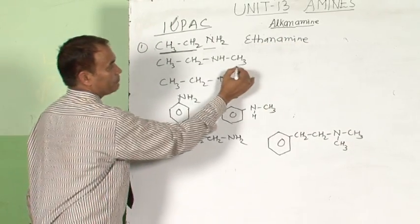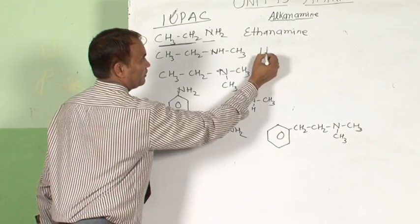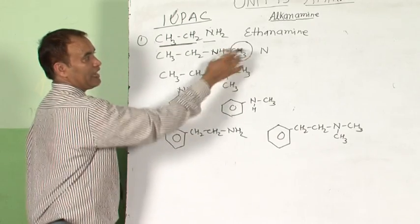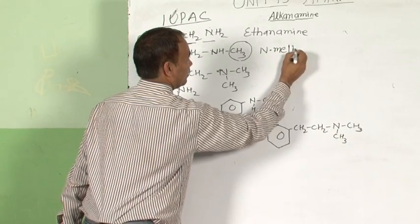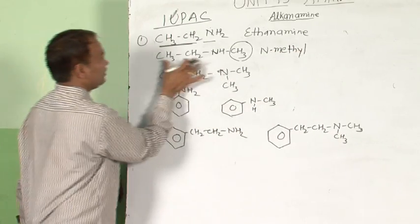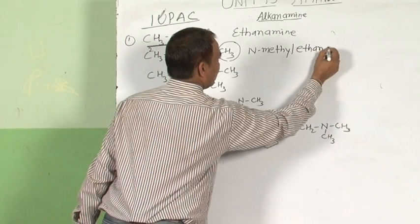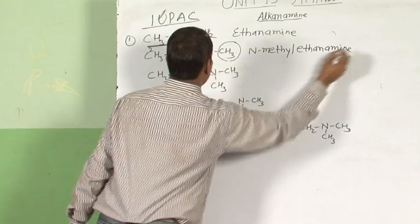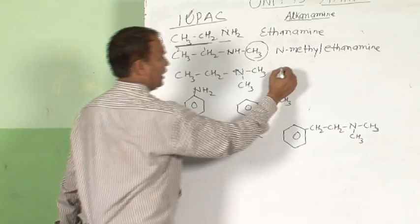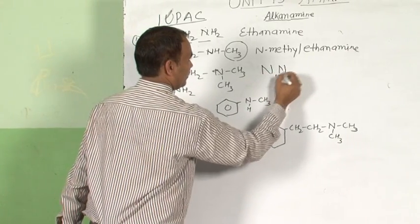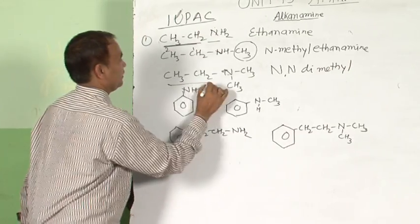Here, first we have to name the alkyl group attached to nitrogen — N for nitrogen. With one methyl group at nitrogen and an ethane chain, it is N-methylethanamine. Similarly, here there are two alkyl groups at nitrogen — first we name them N,N-dimethyl, then ethanamine: N,N-dimethylethanamine.